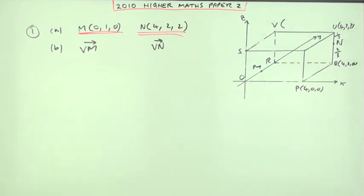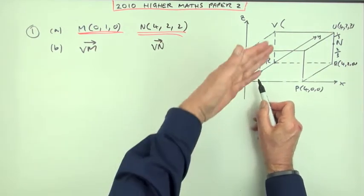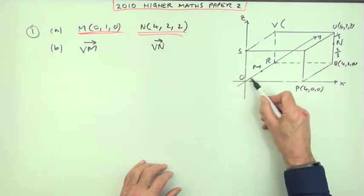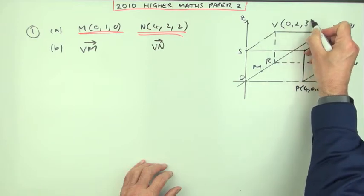You need to know what V is first of all, of course. V would be this vertex here, which on this plane would be none along, the full two back and the full three up. None along, two back, three up.